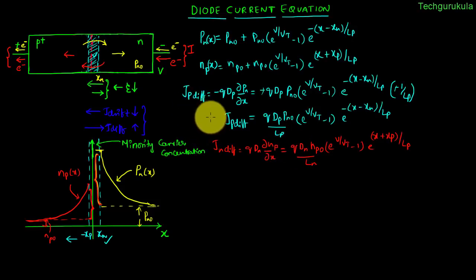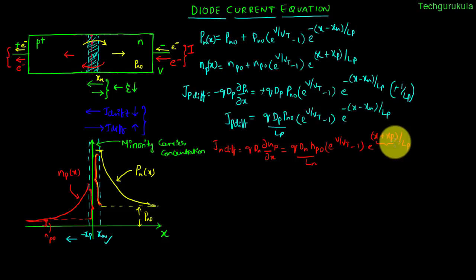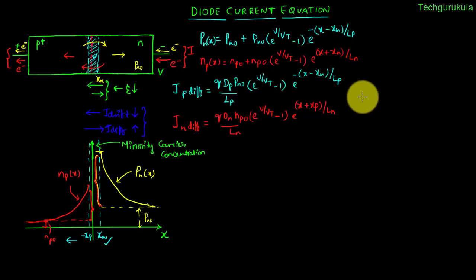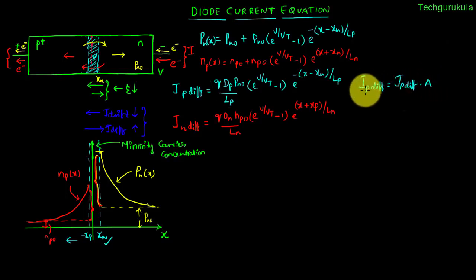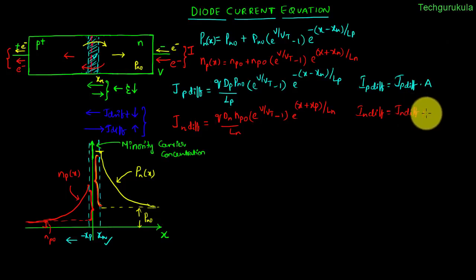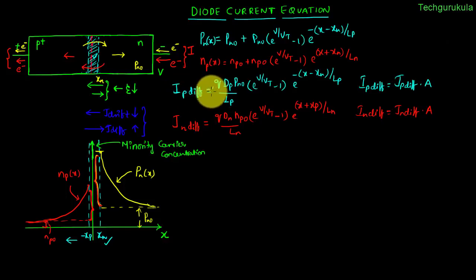Now let us plot how these diffusion currents vary with respect to distance, because the equations show they are actually changing with respect to distance. It will be convenient to talk about currents rather than current densities. So I am writing current I_p,diff in terms of current density J_p,diff — J_p,diff has units of amperes per unit area. Multiplying by the cross-sectional area A of the diode gives I_p,diff. Similarly, I_n,diff = J_n,diff × A.